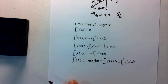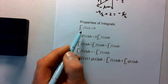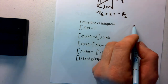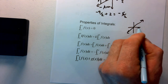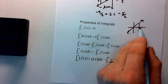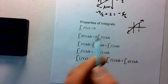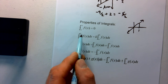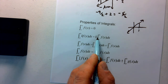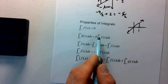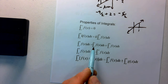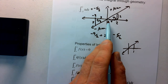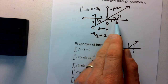Some properties of integration. First, if the bounds are the same — like the integral from 1 to 1 or 5 to 5 of a function — the result is zero, because no area is created. Second, if you have the integral from a to b of k·f(x) dx, where k is a constant, you can pull k outside the integral. Third, if c is between a and b, you can split the integral: integral from a to b equals integral from a to c plus integral from c to b — just as we did by breaking at zero above.